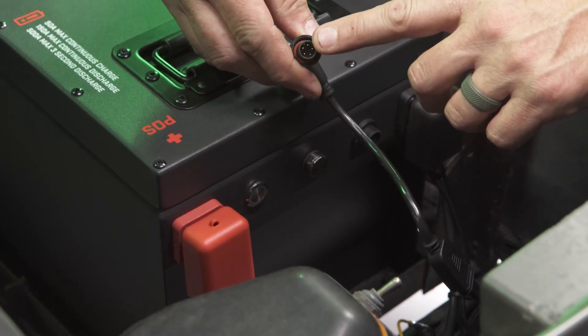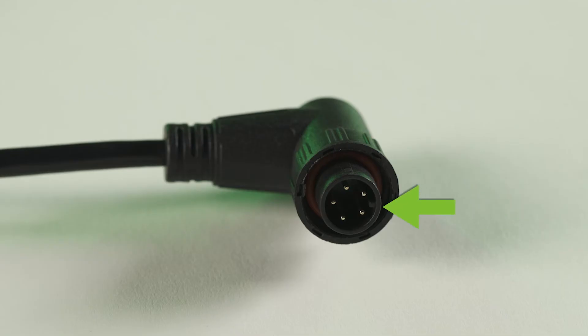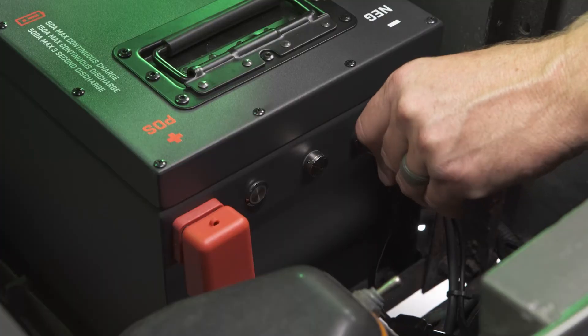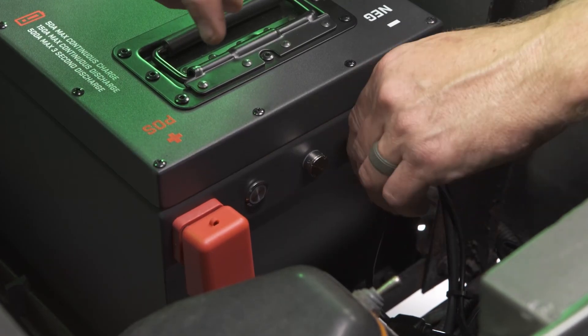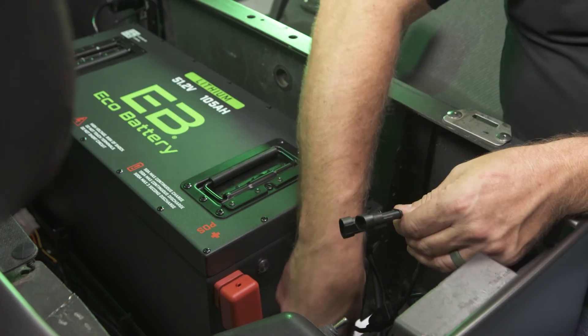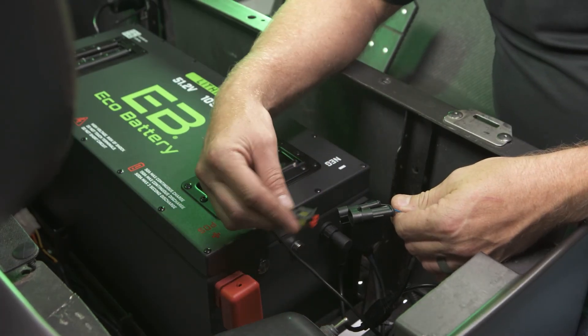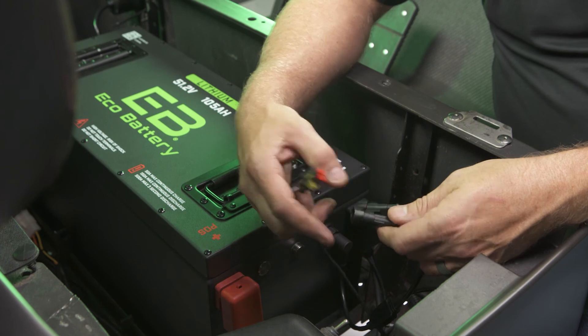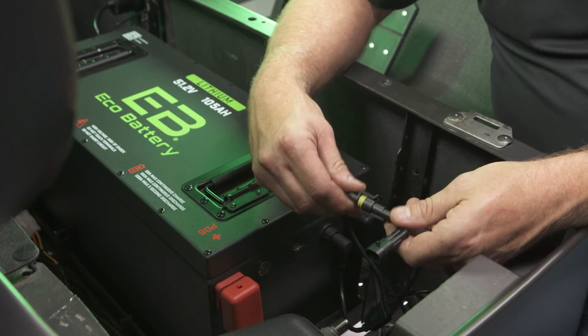Connect the LCD meter harness to the battery, making sure to align the alignment tab on the battery and 90-degree connector. Connect the charger CAN cable to one of the two CAN connectors on the meter cable. It does not matter which connector you use on the meter cable. Secure any loose wires and cables.